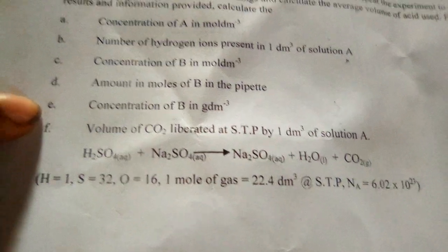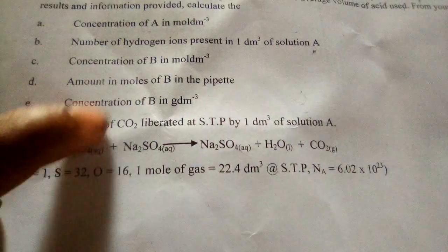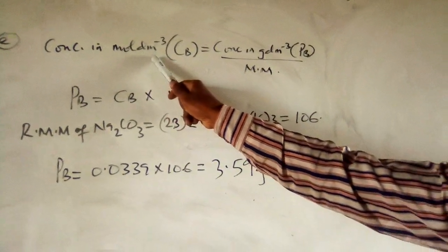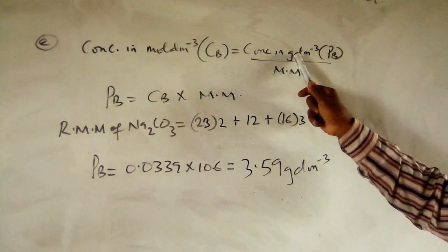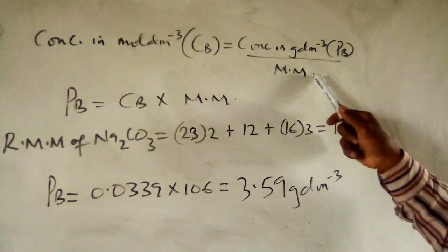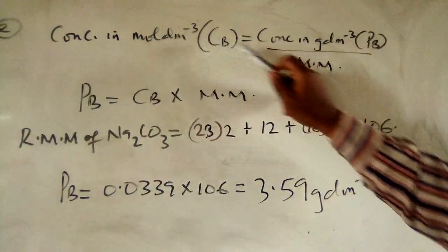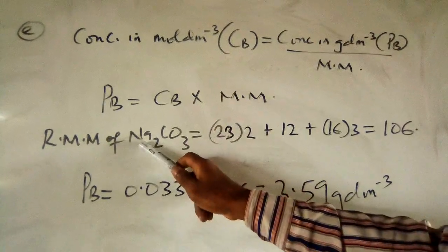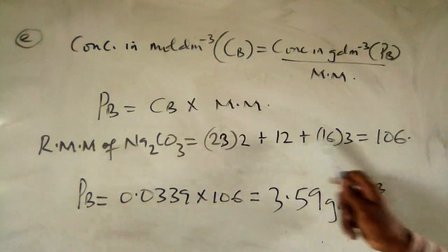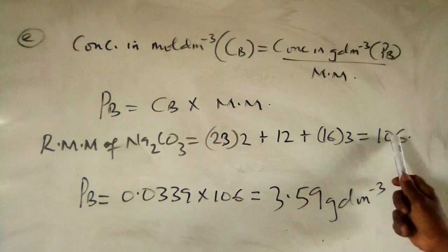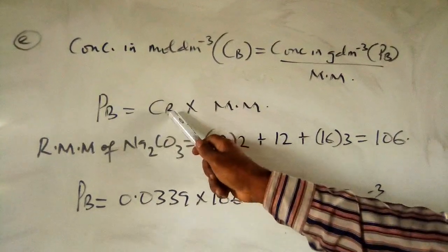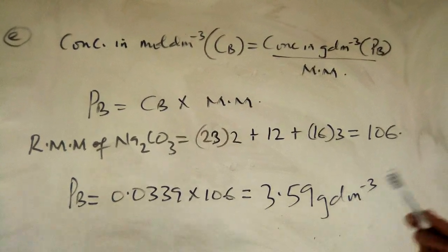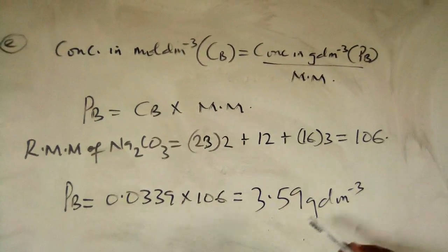Question E asks for the concentration of B in g/dm³. The molar mass of sodium carbonate (Na2CO3): 23×2 + 12 + 16×3 = 106 g/mol. Concentration in g/dm³ = CB × molar mass = 0.0339 × 106 = 3.59 g/dm³. This matches the given 3.6 g/dm³, confirming our calculations are correct.